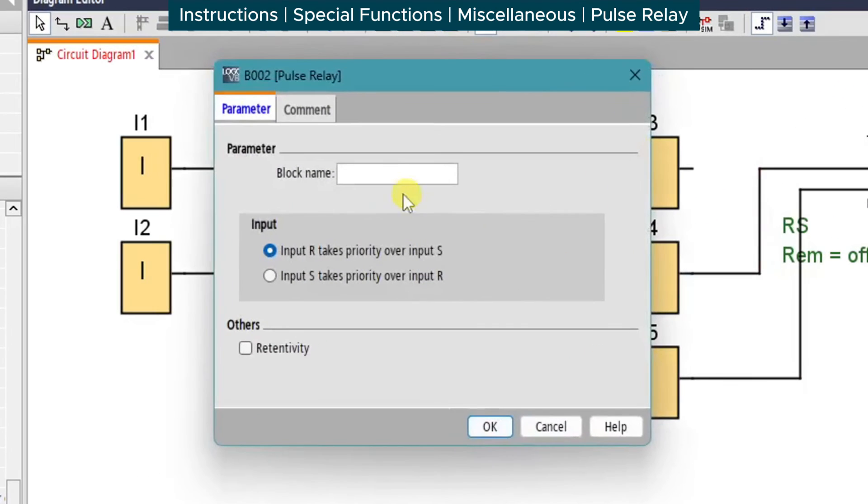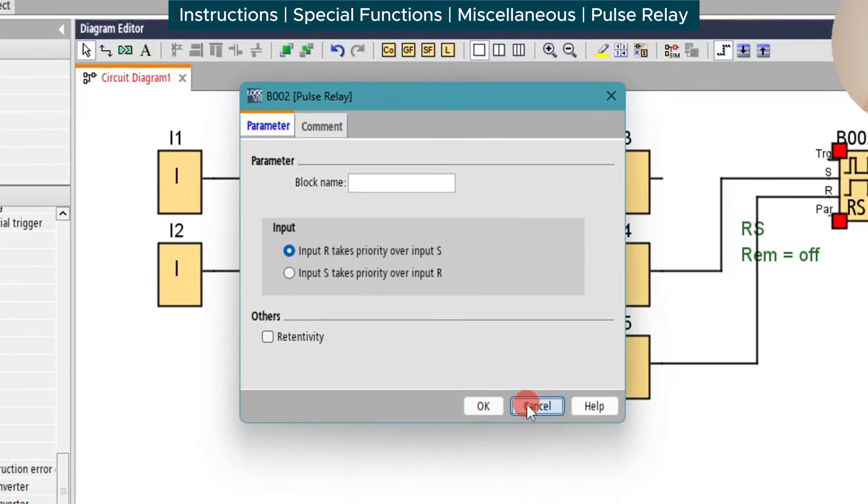But we note in the configuration, as well as giving a block name, we can give the reset priority over the set, or we can give the set priority over the reset, as well as the normal retentivity option. So we'll leave it as RS at the moment.